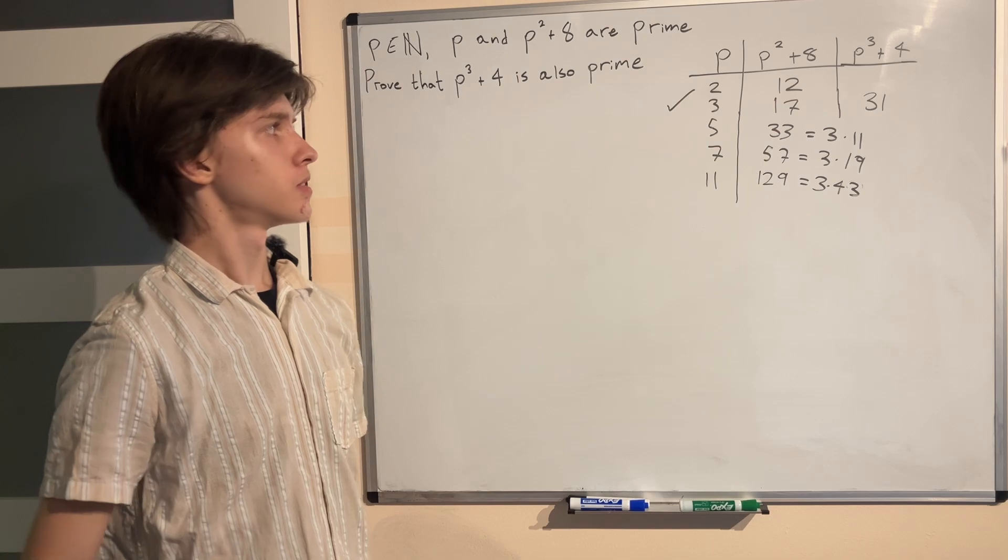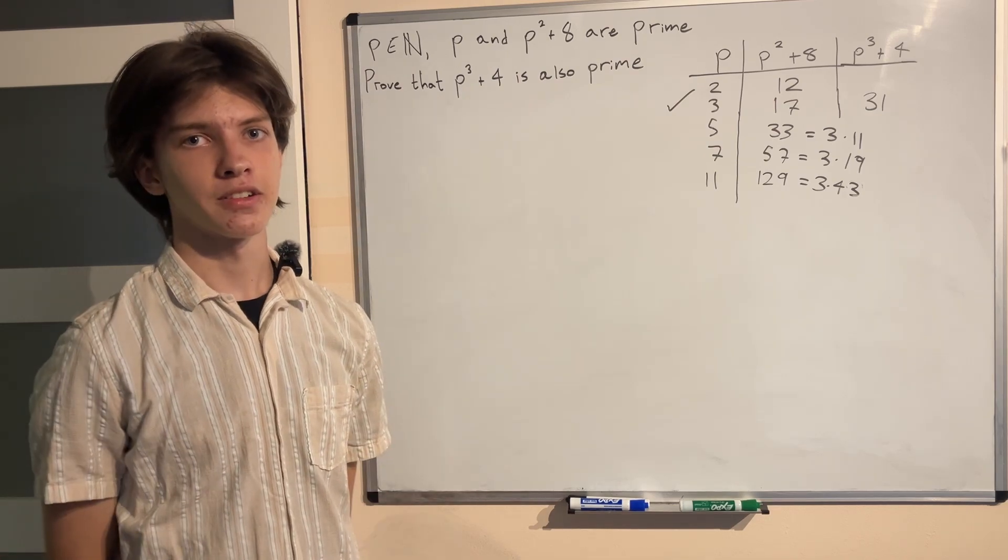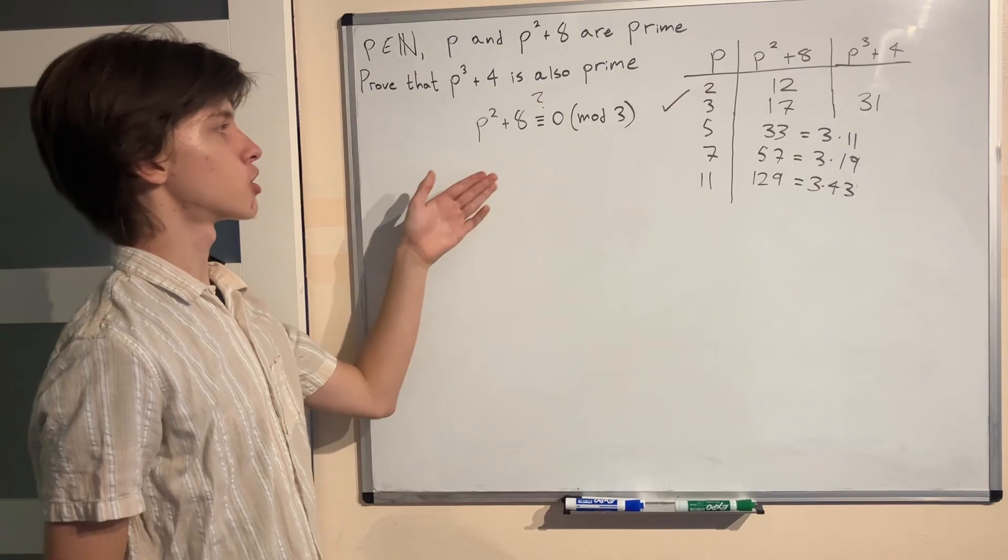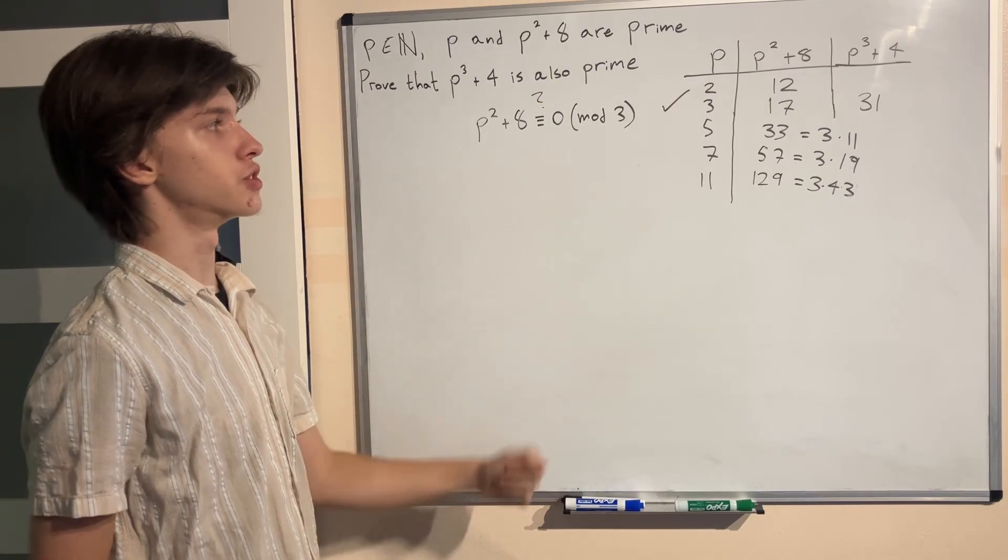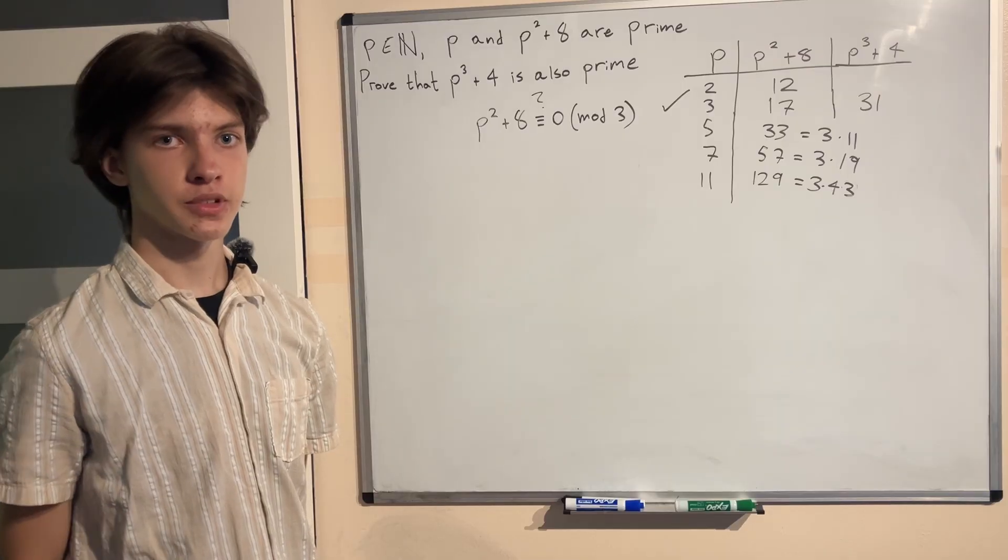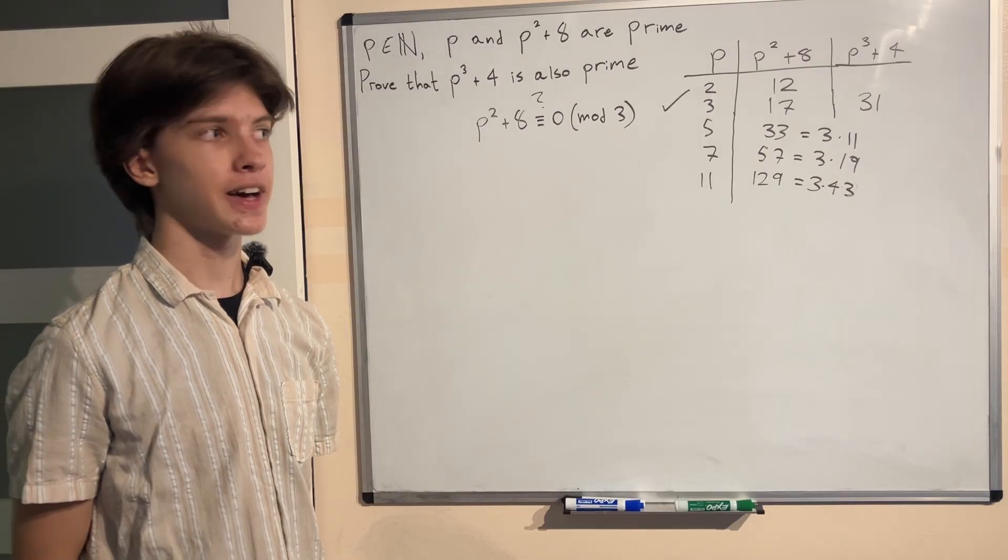Can we somehow prove this? Well let us try right now. So it seems like from our testing that p² + 8 is always congruent to 0 in mod 3 for any prime greater than 3. But how do we prove such a fact?